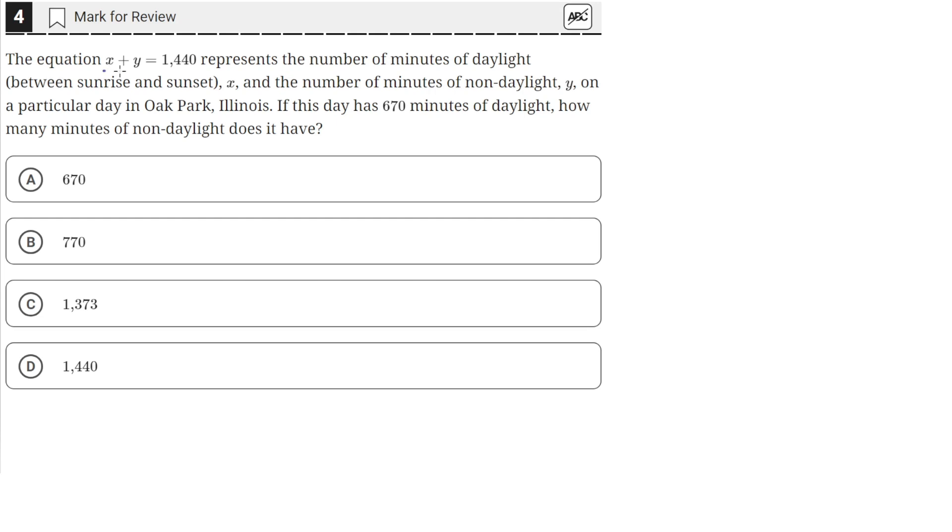The equation x plus y equals 1,440 represents the number of minutes of daylight between sunrise and sunset, x, and the number of minutes of non-daylight, y, on a particular day in Oak Park, Illinois.